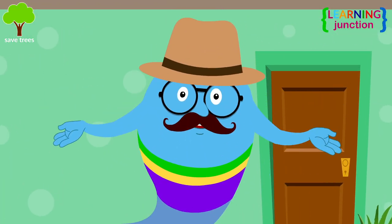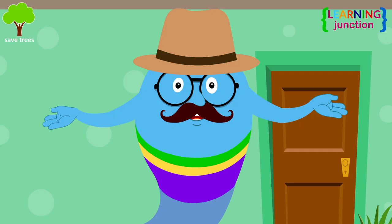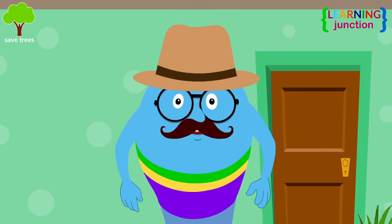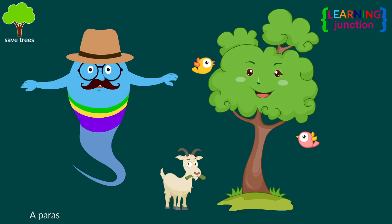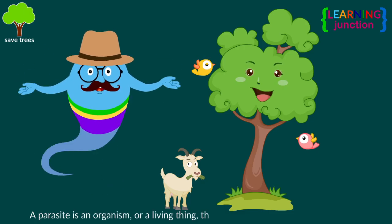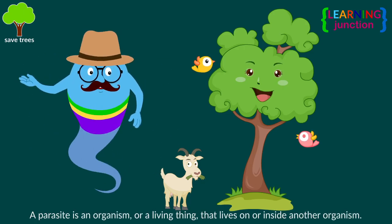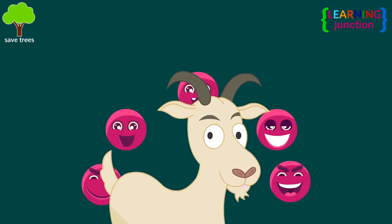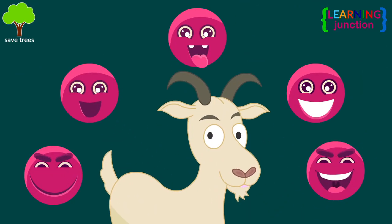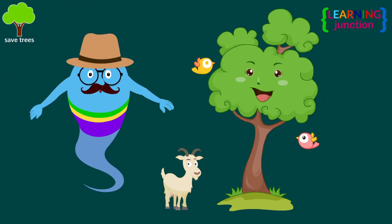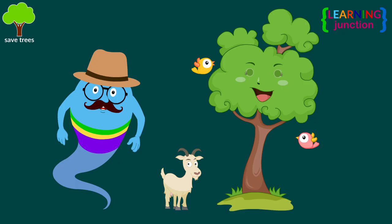Parasites exist around the world and can affect anyone of any gender, race, or socioeconomic status. A parasite is an organism, or a living thing, that lives on or inside another organism. It depends on the other organism for food and other things that it needs to survive. The parasite's victim is called its host, and the host is generally much larger than the parasite.